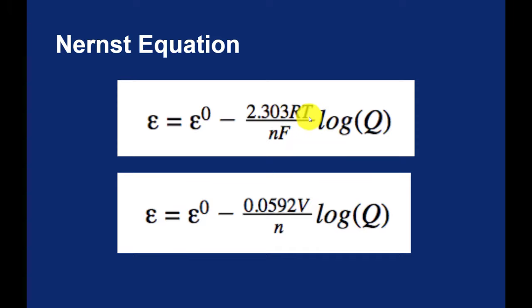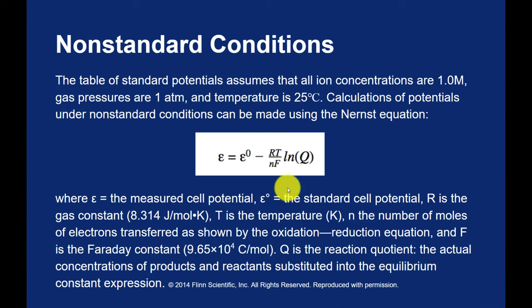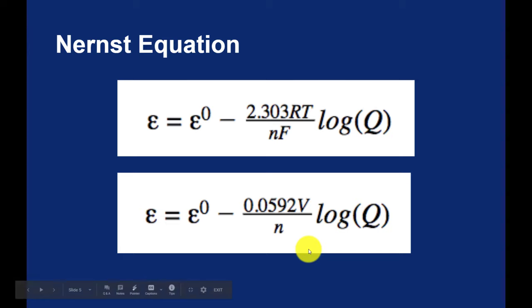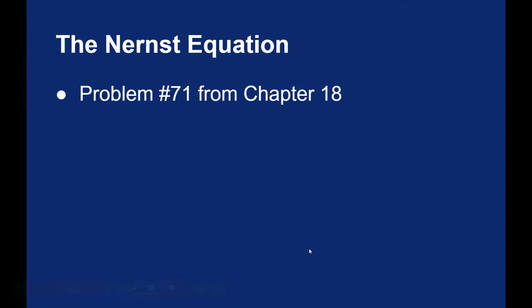We know the value for R. And if we're running this at 25 degrees Celsius, standard temperature, then T and F are also known. So you can plug all of those into a simplified Nernst equation that looks like this. It's all the same equation, and it's the same equation we saw on the previous screen with the natural log. This one right here is probably the easiest to use. So let's take a look at a problem from the back of the book.